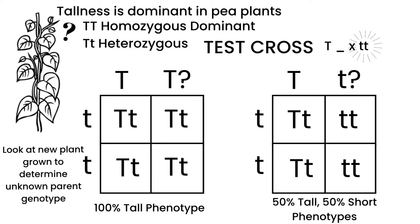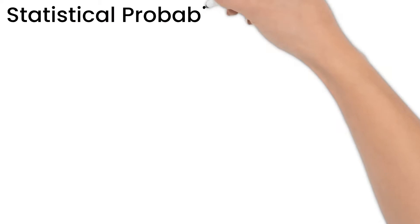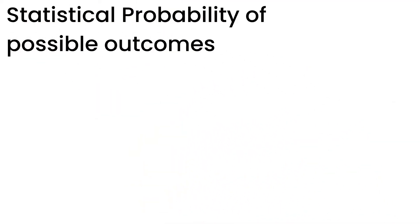Now the number of offspring is a factor here. As mentioned with monohybrid crosses, we are determining the statistical probability of each outcome, and statistics is best seen with large numbers.